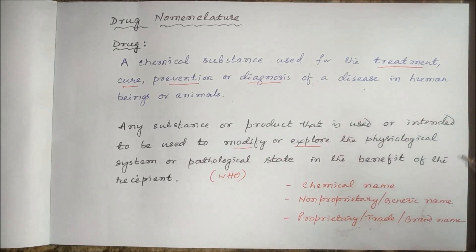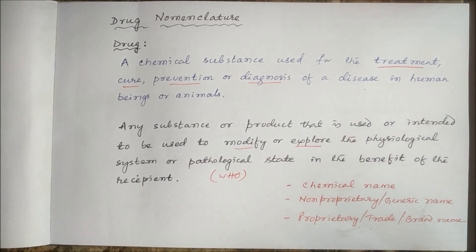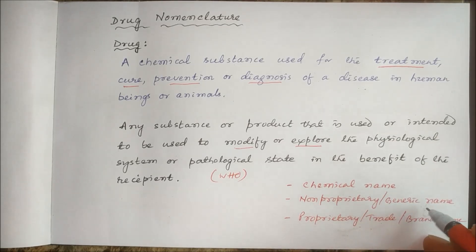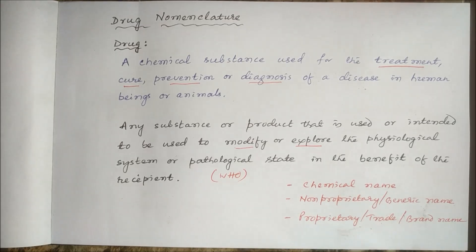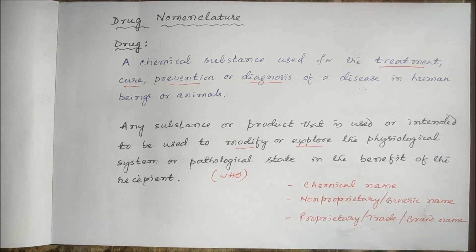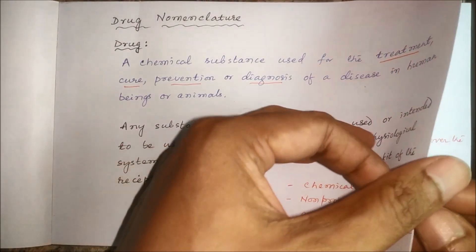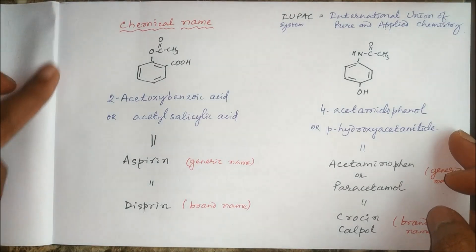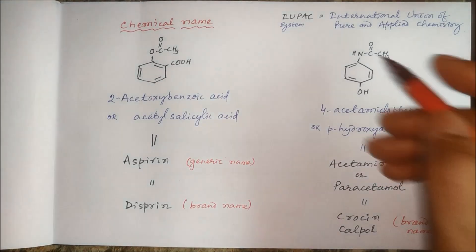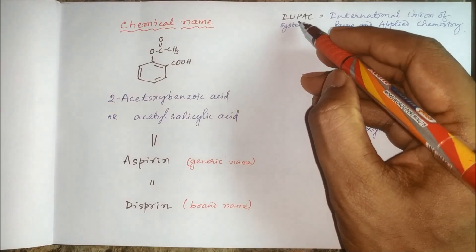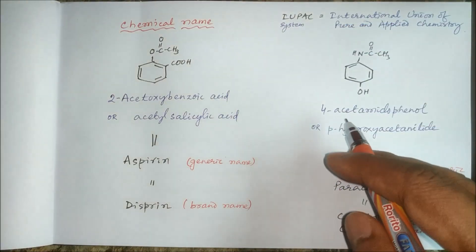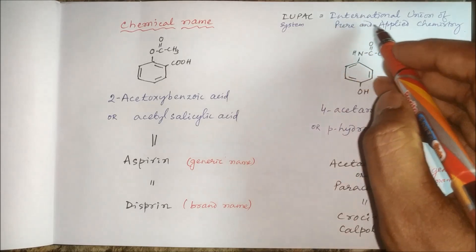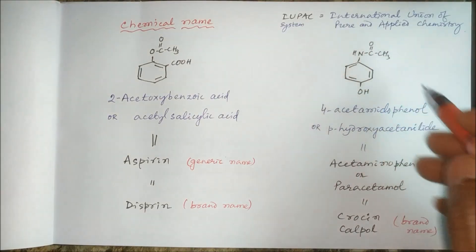So a drug can be named in three ways: one is the chemical name, second is the non-proprietary or generic name, and third is the proprietary or trade name or brand name. The chemical name usually uses the IUPAC system — IUPAC stands for International Union of Pure and Applied Chemistry.